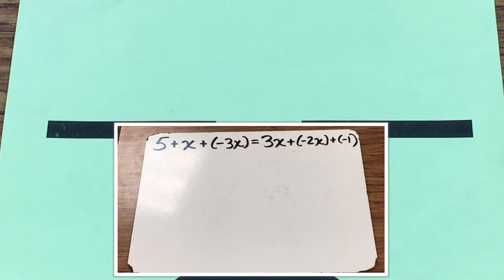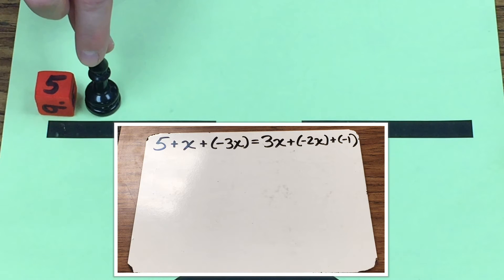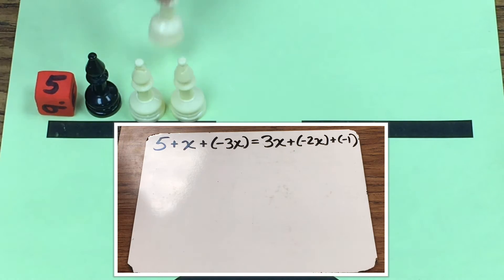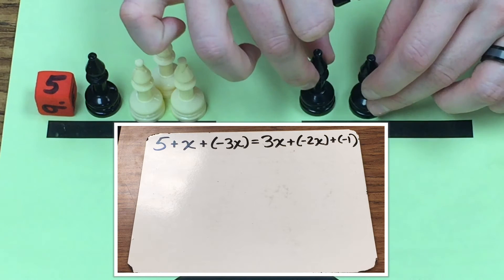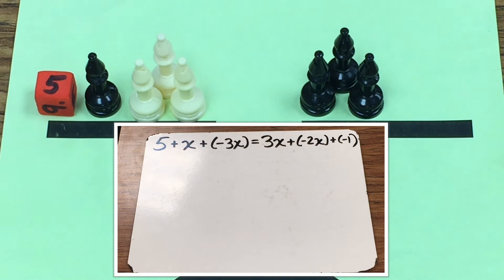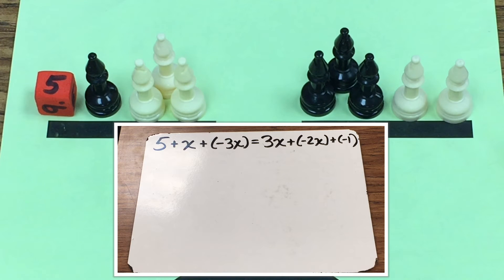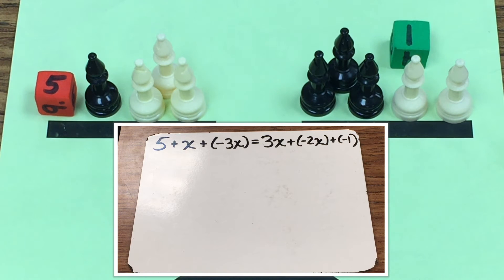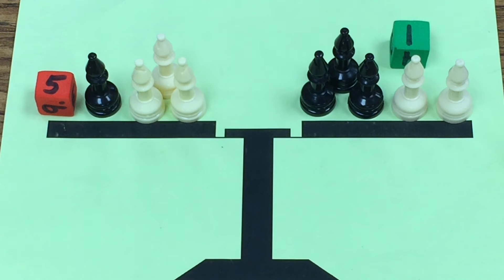The next problem is a little more complicated: 5 plus x plus the opposite of 3x equals 3x plus the opposite of 2x plus negative 1. There's a lot more going on here, and the neat thing is there are multiple ways you could solve this.